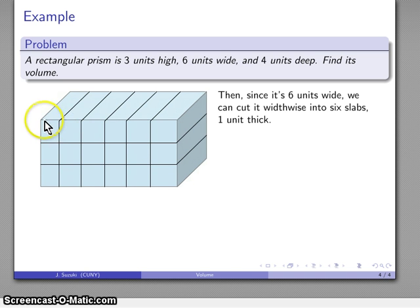The prism is six units wide, so I can cut it into six slabs, one unit thick. So here's one, two, three, four, five, six. So again, here's our width of six units.